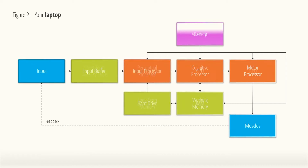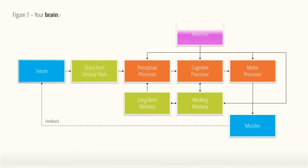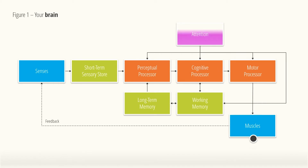If we bring that slide back and replace a couple of words, all of a sudden this diagram pretty much looks like the inside of your laptop. The senses become input, the muscles become your monitor, and in between we find all kinds of memory and a couple of processors. So from the lens of the cognitivist paradigm, learning is not as much about rewards, punishments, and outward behavior as it is about optimizing information to efficiently move through the inner workings of your brain. That means it's time to look at some theories and introduce you to three of my buddies.